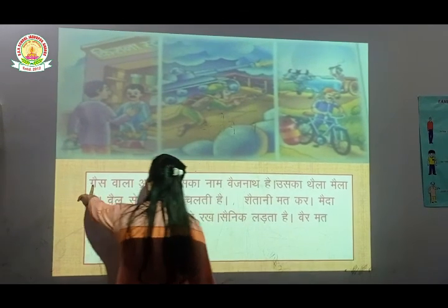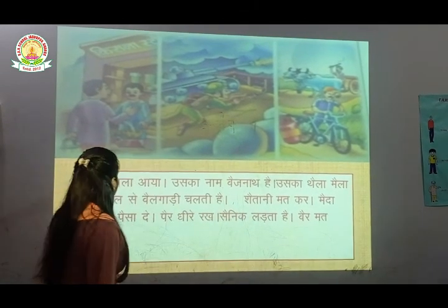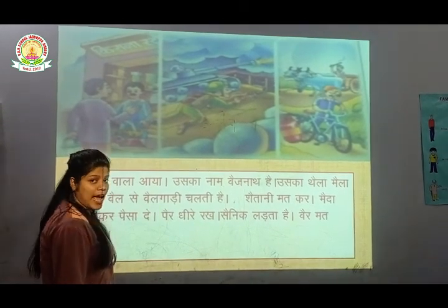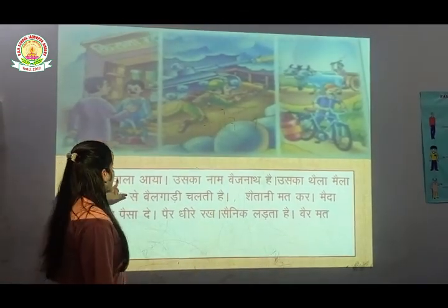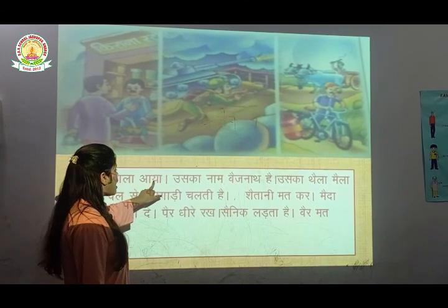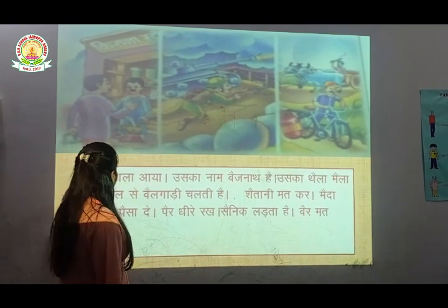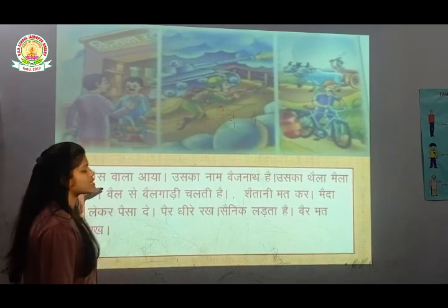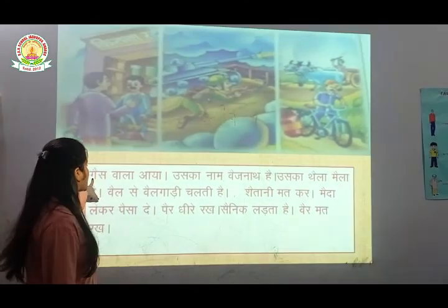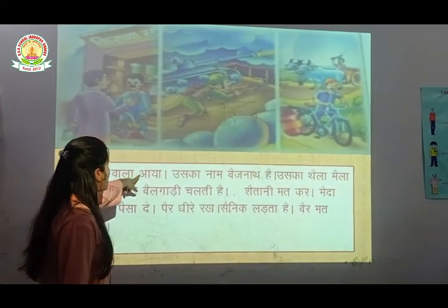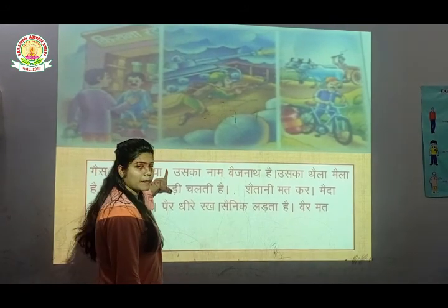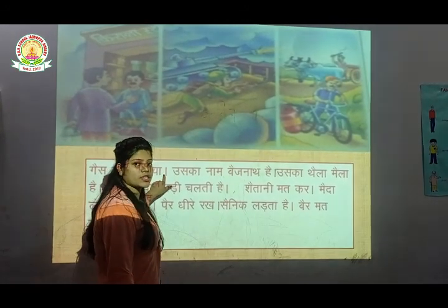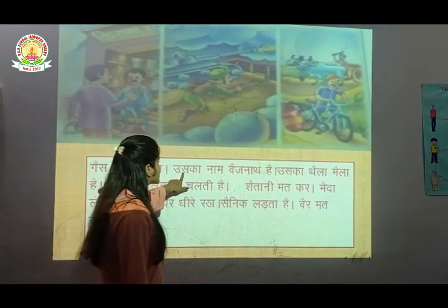ग, गपी, ए — ए की मात्रा है। गैस वाला आया। क्या लिखा हुआ है यह? फिर एक बार पढ़ेंगे — गैस वाला आया। यहाँ जहाँ खड़ी पाई है, वहाँ थोड़ा रुक जाते हैं, और फिर उसके आगे पढ़ेंगे।